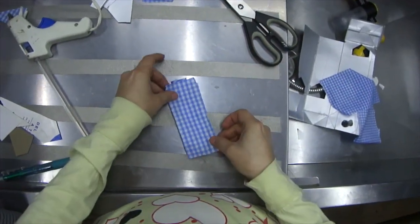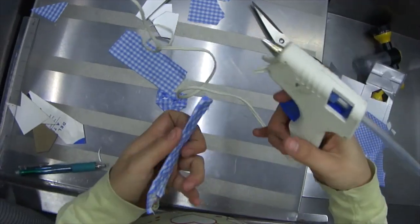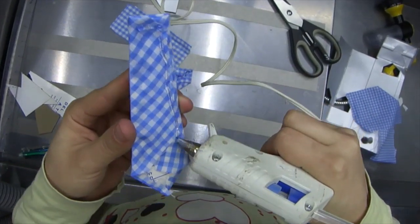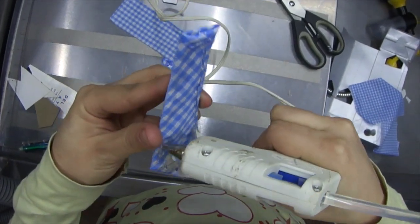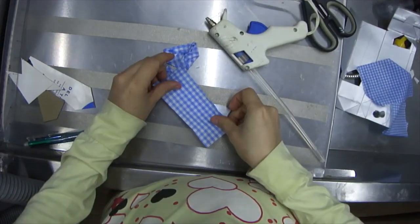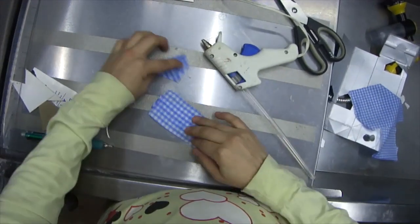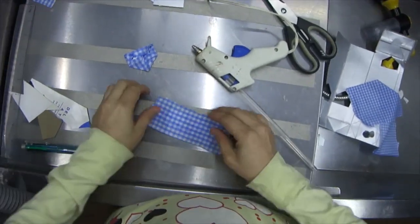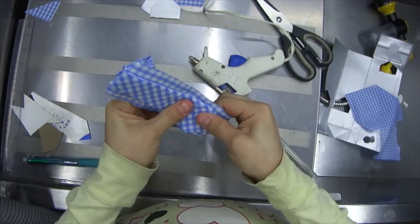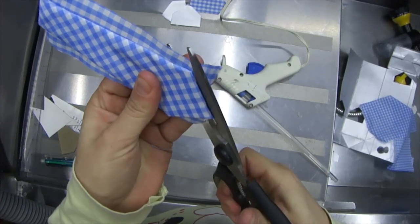Using the fabric that was left over from the smaller piece, we're going to cover up the back side of our tie so it looks more finished. We're just going to put some hot glue on the edge—make sure it's not too close so that we can cut it off and you won't see it from the front. We're just going to trim off any excess fabric.